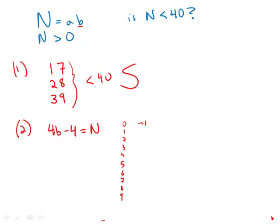Four times two is eight, minus four is four, doesn't work. Four times three is 12, minus four is eight, doesn't work. Four times four, 16 minus four is 12, doesn't work. Four times five is 20, minus four is 16, doesn't work. Four times six is 24, minus four is 20, doesn't work.